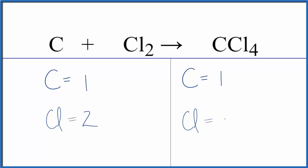Everything is pretty close except the chlorine atoms. We can only change the coefficients in front of the atoms. We can't change the small numbers, the subscripts - we can't change these numbers.